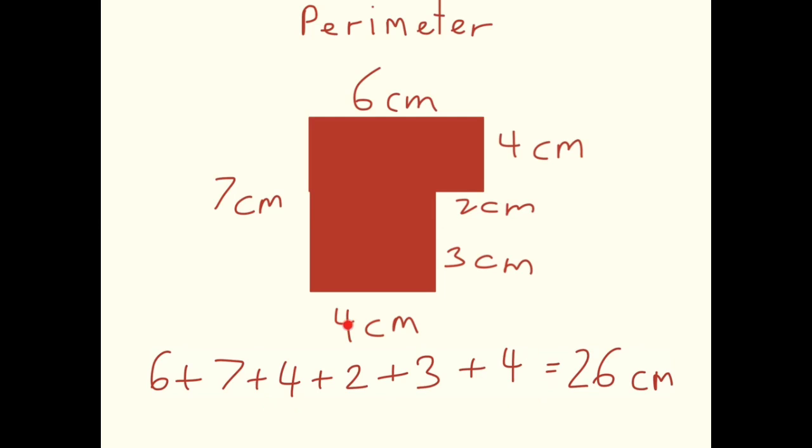When you've added all the sides together, you have the perimeter of the rectilinear shape. Don't forget the unit of measurement—in this case centimeters. So the perimeter of this shape is 26 centimeters.